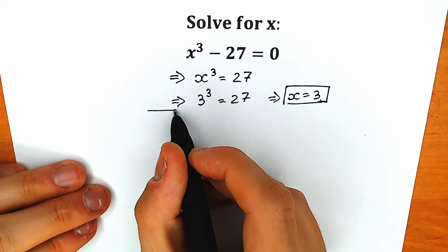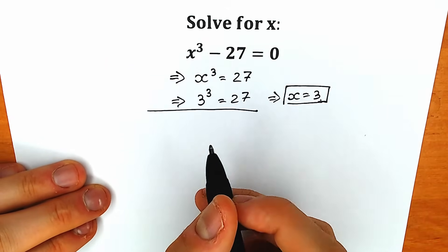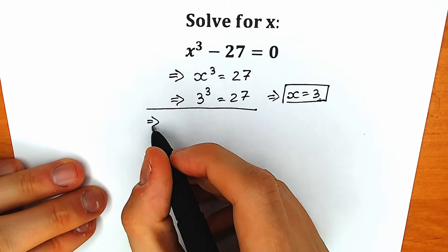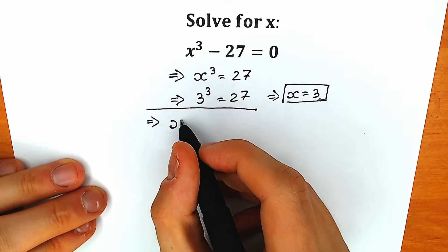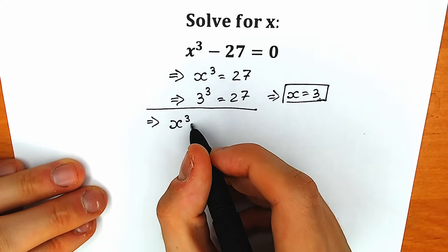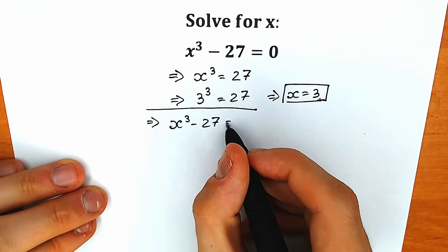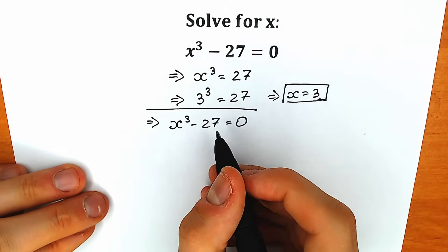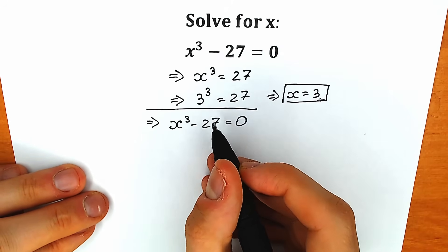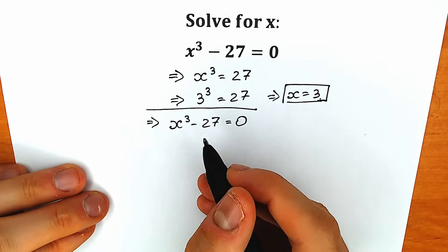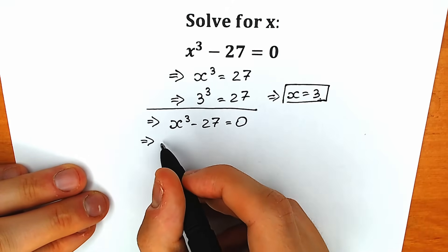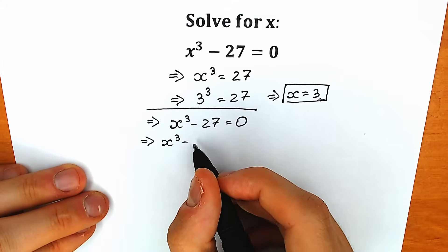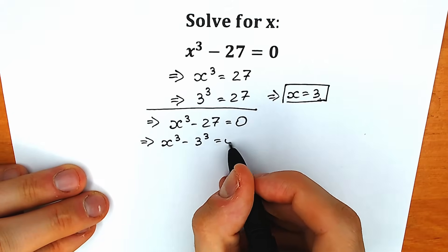Let's solve this question correctly and step by step. Let's rewrite it. We have x³ minus 27 equal to 0. First of all, instead of 27, we can write 3³. So we have x³ minus 3³ equal to 0.